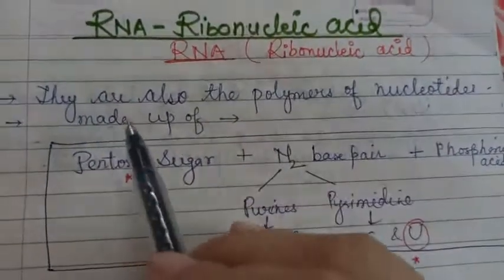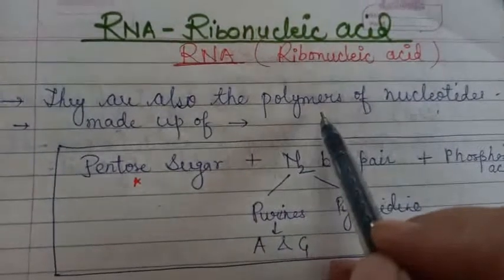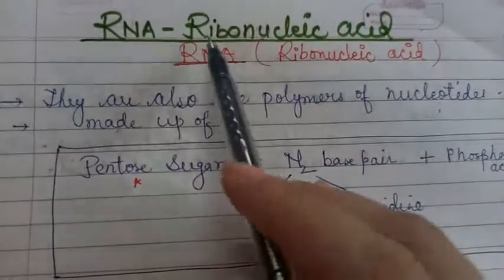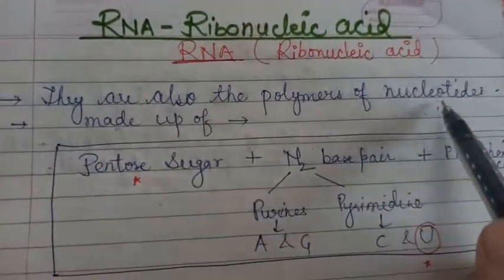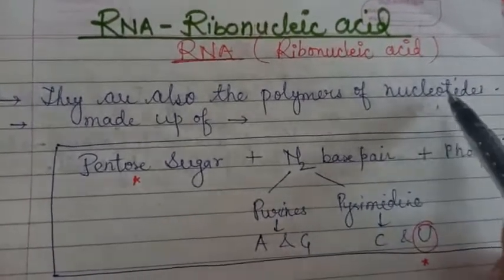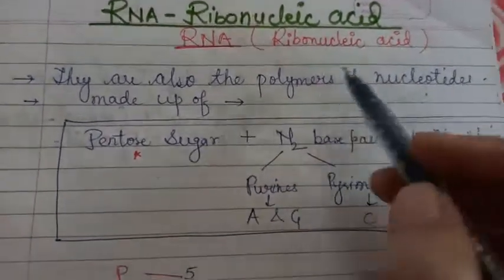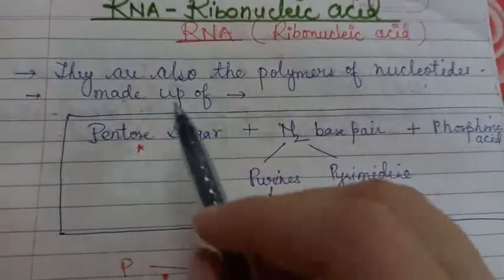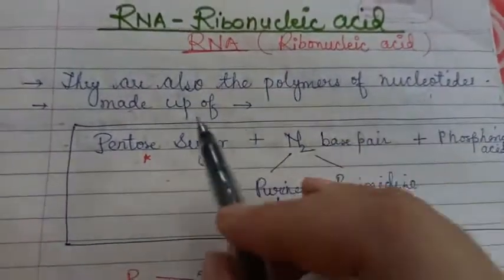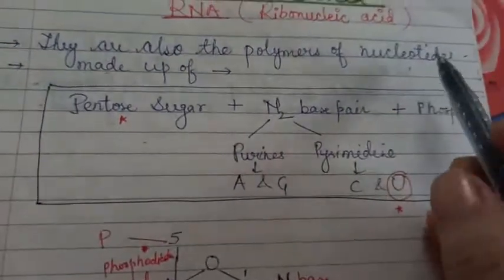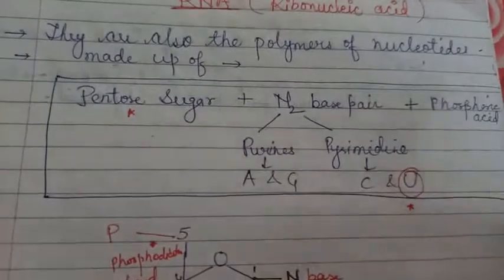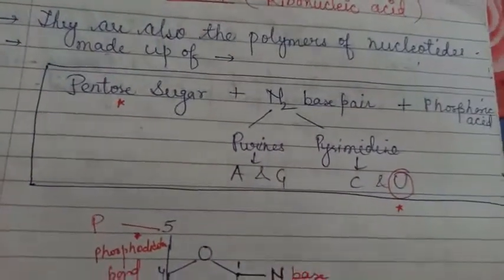Basically one thing is common in DNA and RNA - they are the polymers of nucleotides. DNA is also a polymer of nucleotide, similarly RNA is also a polymer of nucleotide only. And you know what is a nucleotide? This is a kind of revision which you have already gone through in the previous video.